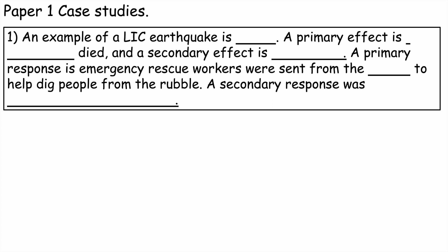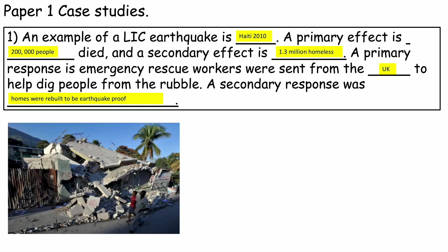An example of an LIC earthquake is Haiti, and that occurred in 2010. A primary effect is circa 200,000 people died, and a secondary effect is 1.3 million were left homeless. A primary response is emergency rescue workers were sent from the UK to help dig people from the rubble. A secondary response was homes were rebuilt to be earthquake proof. Here we can see an image of the devastation caused by the Haiti earthquake — the buildings literally just collapsed.